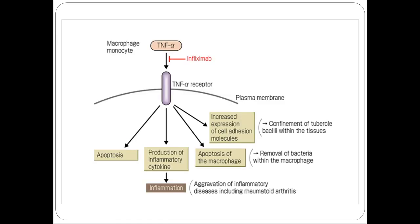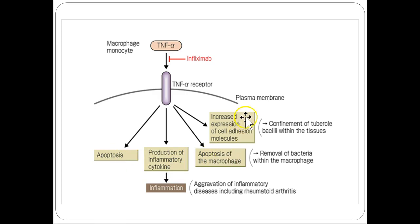These drugs work by inhibiting tumor necrosis factor alpha, preventing it from interacting with the TNF alpha receptor, which blocks a number of downstream effects — cellular apoptosis, production of inflammatory cytokines, apoptosis of macrophages, and increased expression of cell adhesion molecules. With less TNF activity, the disease is less beholden to the immune system's inflammatory response.